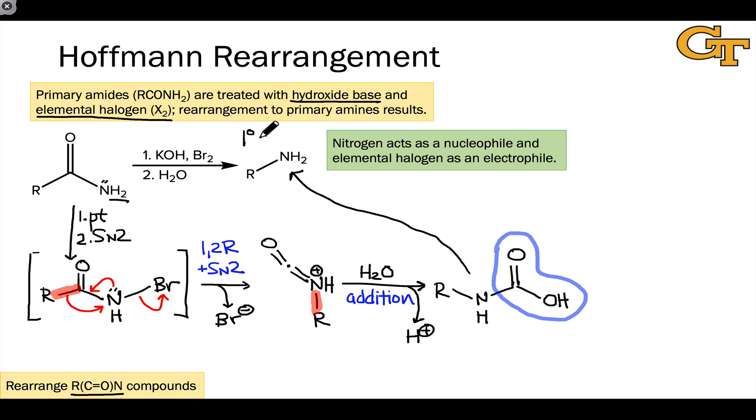So the Hoffmann rearrangement is a nice way to make primary amines. Thinking about this from a very general perspective, essentially what we've done is we've lost the carbonyl group that sits between the nitrogen and the R group, and a bond has formed between the R group and the nitrogen. What's interesting is that the nitrogen, in a sense, acts as an electrophile during this bond formation process. We can compare that arrow with the curved arrow showing the migration of the R group. The electron flow is toward nitrogen now rather than away from nitrogen, which tends to be backwards with respect to the amine syntheses we've seen previously.